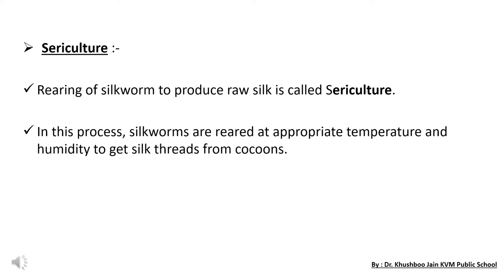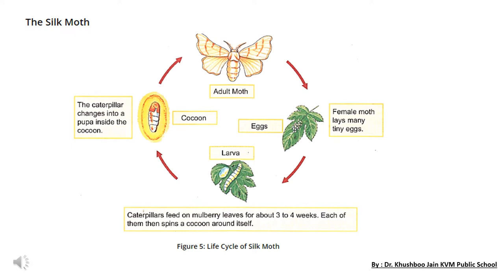In this process, the silk worms are reared at appropriate temperature and humidity to get silk threads from the cocoon. So silk worms are produced and maintained specifically for producing silk.